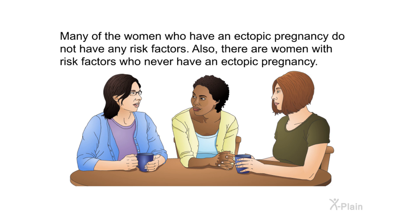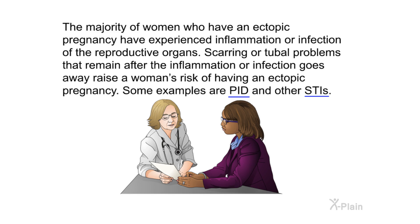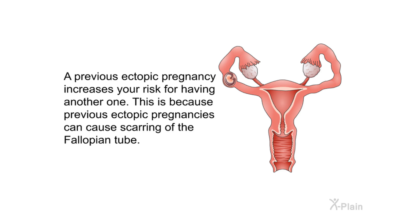Many women who have an ectopic pregnancy do not have any risk factors, and there are also women with risk factors who never have an ectopic pregnancy. The majority of women who have an ectopic pregnancy have experienced inflammation or infection of the reproductive organs. Scarring or tubal problems that remain after such inflammation raise a woman's risk, with examples including PID and other STIs. A previous ectopic pregnancy also increases risk because it can cause scarring of the fallopian tube.